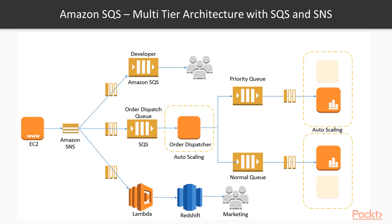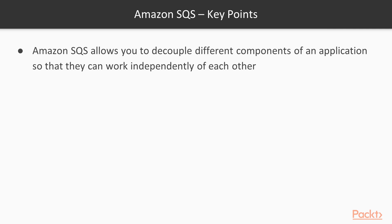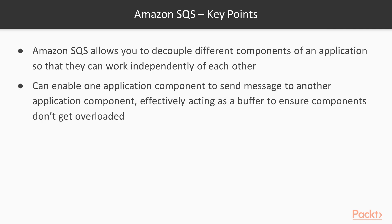These illustrations showcase how Amazon SQS can be used to design application architecture in the cloud with greater resilience. Key points: SQS allows you to decouple different components of an application so they work independently. An SQS queue acts as a buffer to ensure components don't get overloaded — for example, preventing web servers from sending too many requests to back-end servers. A queue system holds messages for a short duration so application servers can retrieve and process them when there's sufficient capacity.